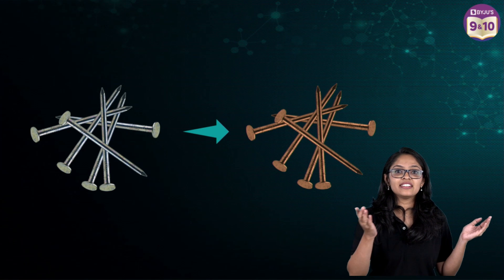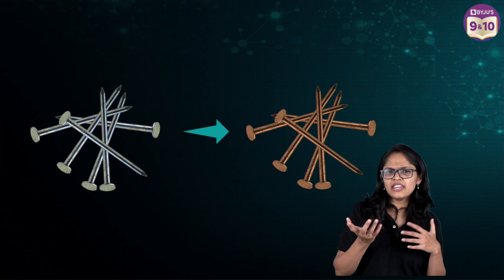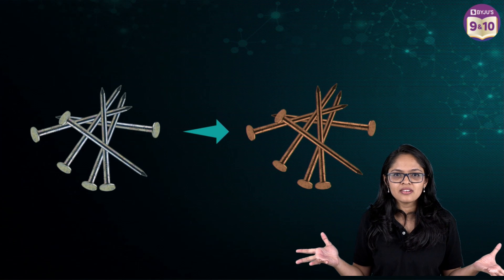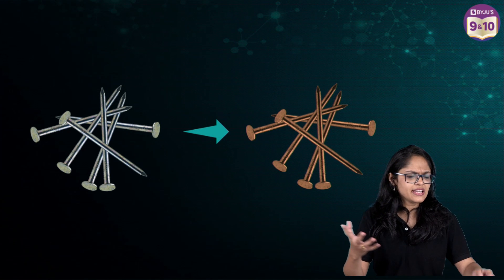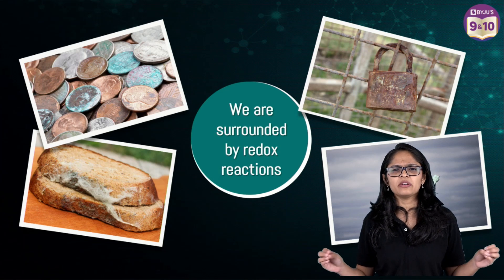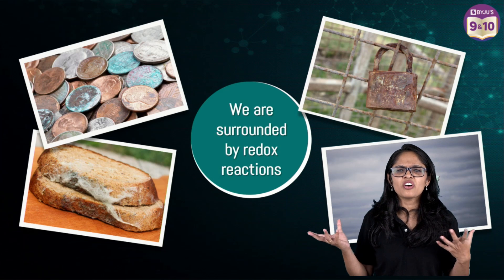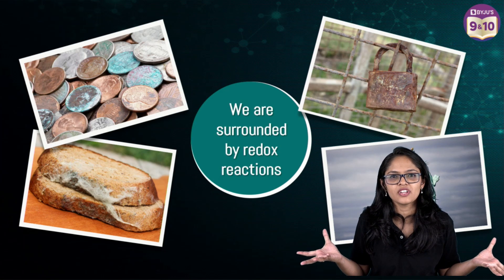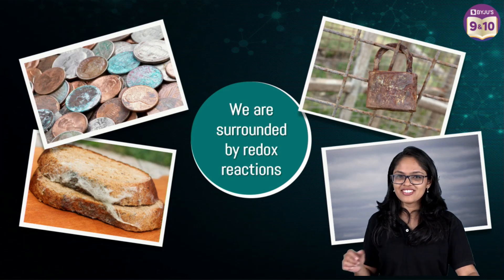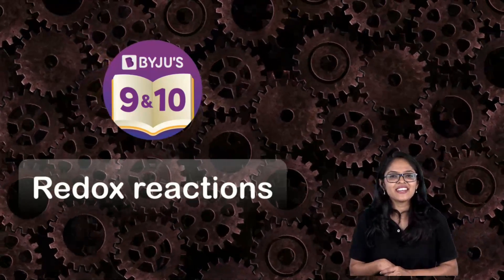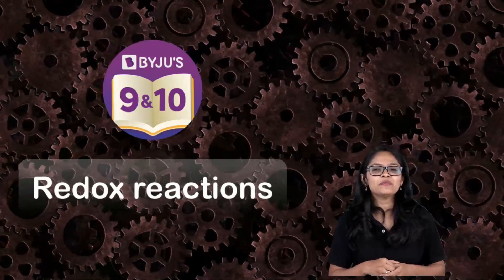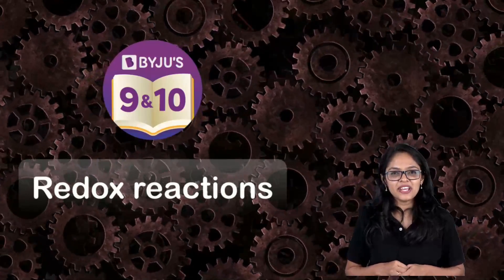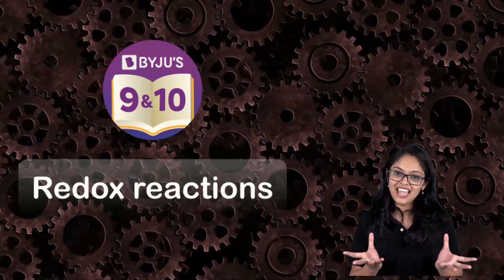This rusting, and that cooking oil, butter, ghee — all these oils or fats going bad are all redox reactions. So we are actually surrounded by redox reactions, whether it be coins getting rust or the tarnishing of some metal. What are redox reactions? In this video we will be discussing about redox reactions. Welcome to Baiju's 9 and 10. I am Tripti, your chemistry teacher, and today we will be discussing about redox reactions.